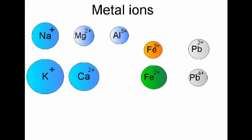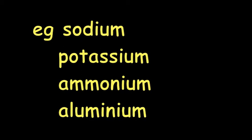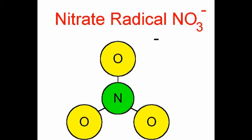Ionic compounds have two parts. The positive ions are written first. They can be metal ions or radicals such as ammonium. Write their names unchanged with no multiplier prefixes. The negative ions are written last. The non-metal ions must be changed to IDE words. There are no multiplier prefixes. Radicals are written without change as well.